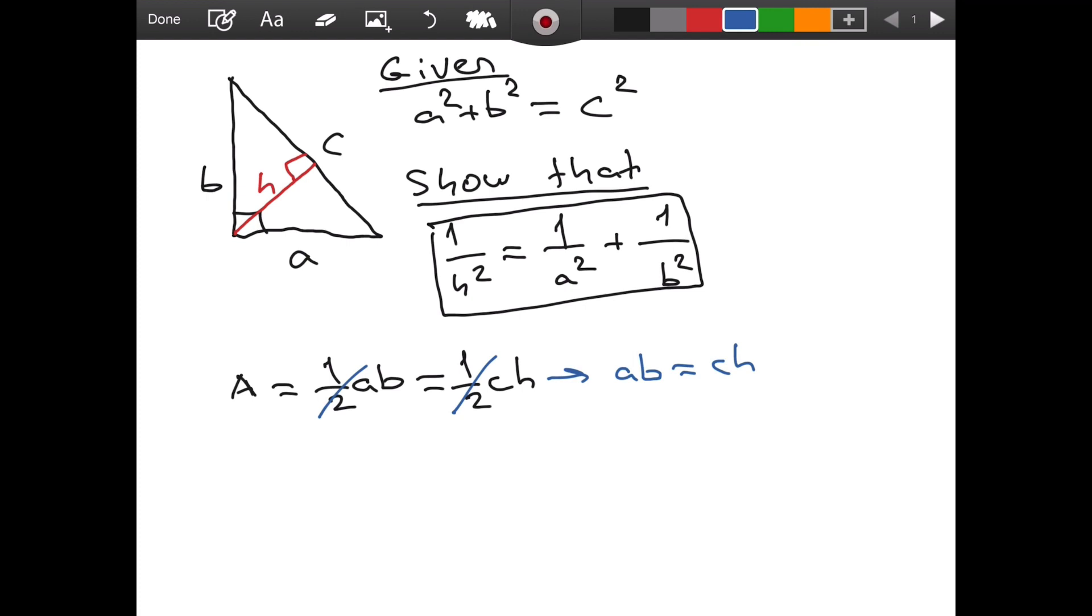And if we square both sides in this equation, what do we have? Well, what we have is, we have A squared B squared is equal to C squared and H squared.